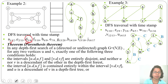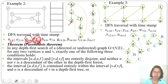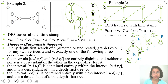D can also be our U: D's discovery time and finishing time are within A's, so D is a descendant of A. F can also be our U: F's discovery time and finishing time are within A's and also within C's, so F is a descendant of both A and C. However, D's times are 3 and 4, while F's times are 5 and 10 — they are disjoint — so D and F are not descendants of each other.